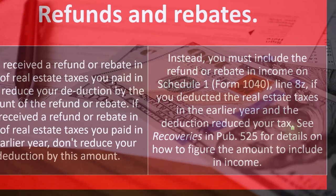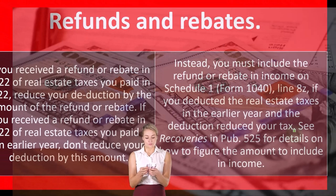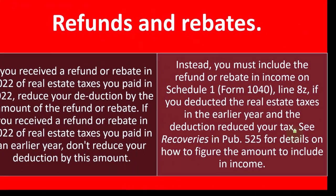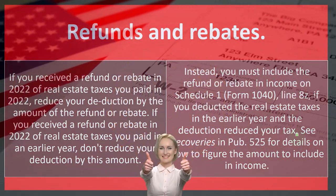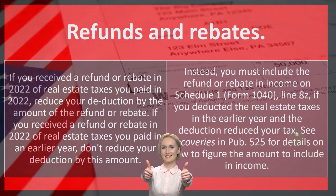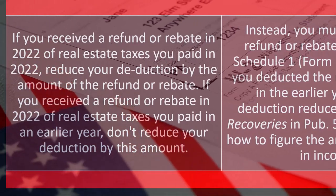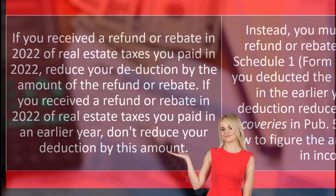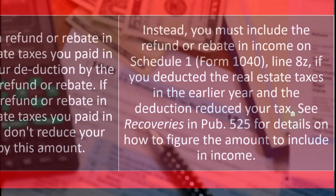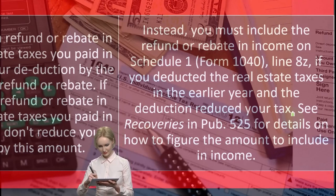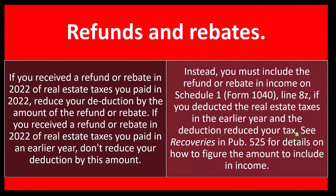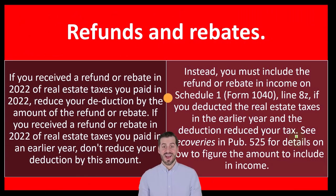This is the same concept we saw with the state tax refund. If you got a benefit last year for something you deducted and then they refunded it this year, rather than going back and fixing last year's return, the tax code lets you handle it this year — you include it in income this year. It has a tax burden to you this year because you got a tax benefit from it last year, essentially receiving a deduction you shouldn't really have gotten because you got a refund. That's the cash-based problem. See recoveries in Publication 525 for details on how to figure the amount to include in income.